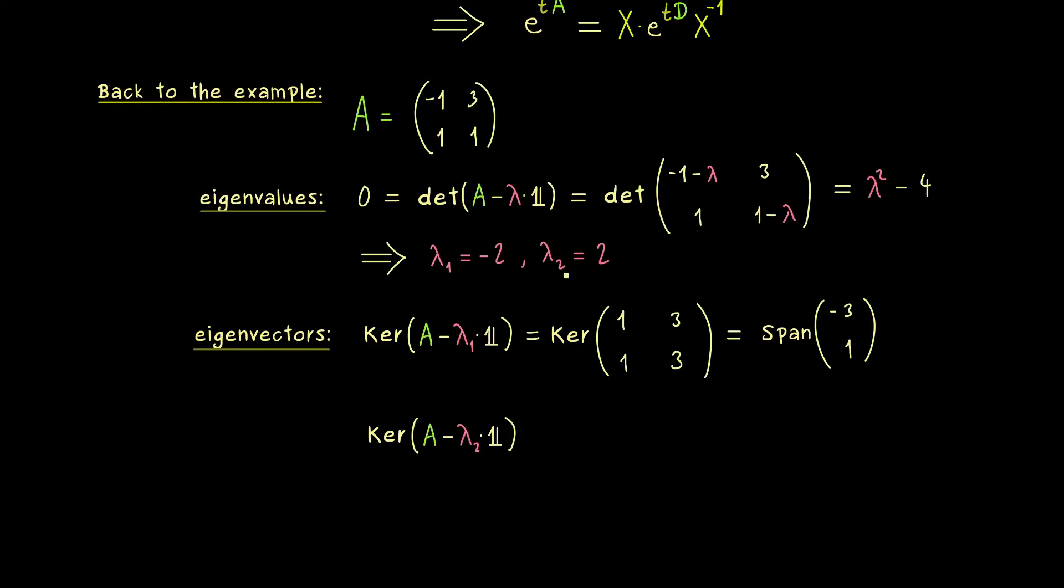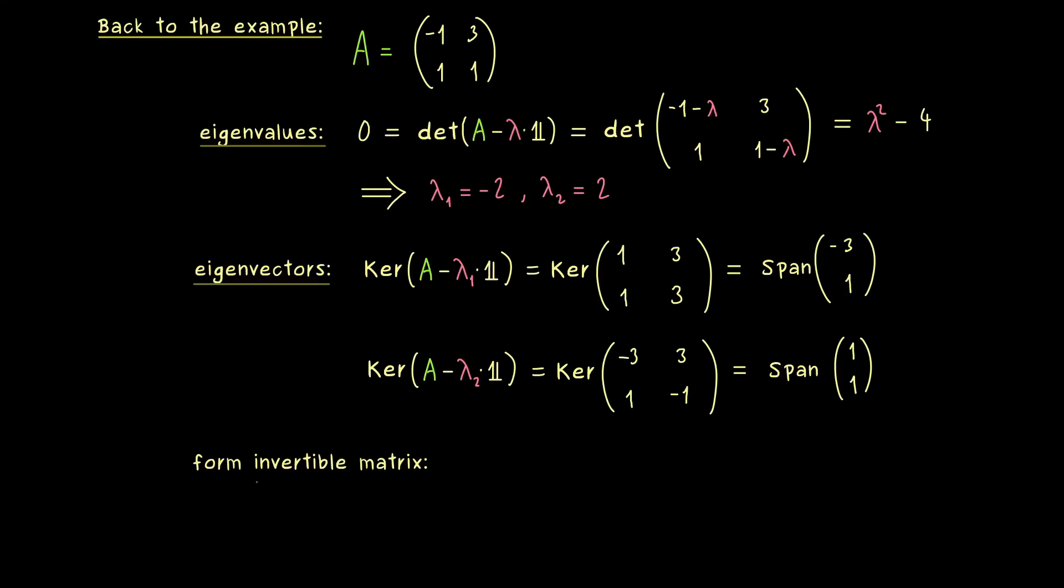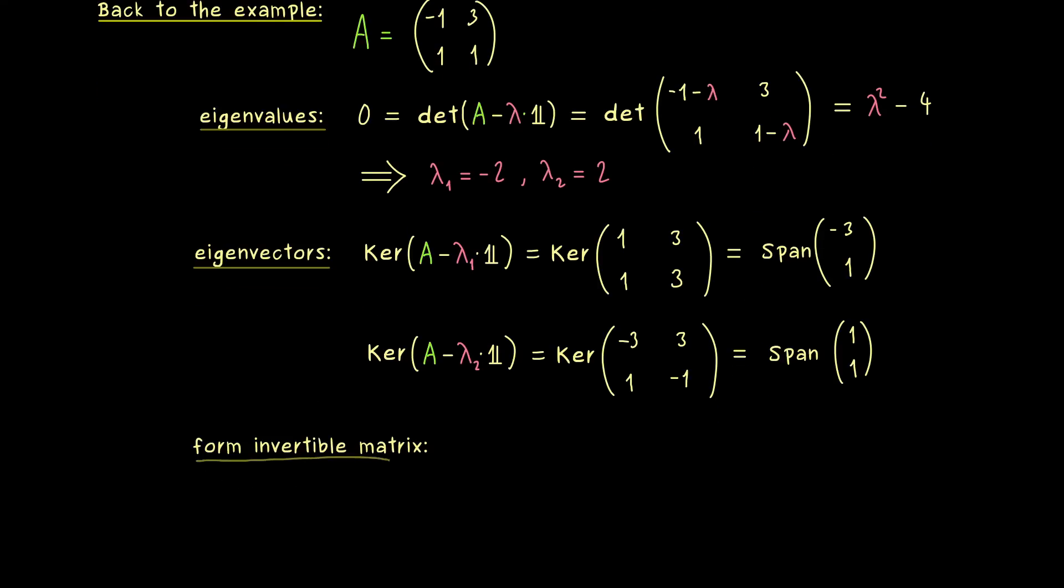And there, with lambda 2 is equal to 2, we have to subtract 2 on the diagonal, and this results in minus 3 and minus 1. And again, this kernel is one-dimensional and we can immediately see one vector that spans it. In this case, we can just choose 1, 1. And with that, we are done. We have the two eigenspaces and also two eigenvectors we can use to form such a matrix X.